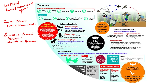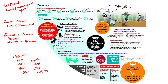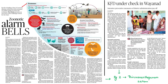Zoonotic diseases spread mainly through direct contact, indirect contact, vector-borne, airborne, foodborne, or waterborne transmission. Examples include anthrax, swine flu (H1N1), avian flu (H5N1), Ebola, Zika, Nipah fever, MERS, SARS, and the currently trending COVID-19. Kerala is affected by zoonotic diseases like Kyasanur Forest Disease — many cases have been reported in Wayanad district — and bird flu, which has affected duck farmers and led to culling of several birds in the northern part of Kerala.